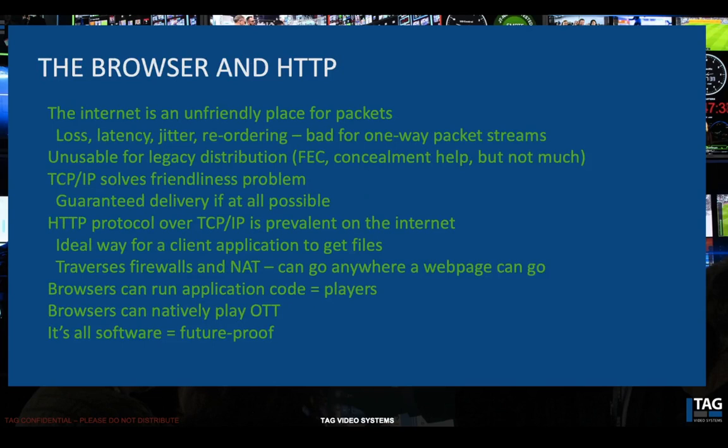Being web-centric, you know there's going to be a browser involved, and if there's a browser, HTTP is involved. Because the internet is a very unfriendly place for packets — if you try and push packets across the internet, they fall all over the floor, they get lost. We have latency issues, packet jitter, and possible reordering. It's really bad for one-way packet streams. This is why the internet was never used for streaming very successfully until OTT came along. For legacy distribution, even forward error correction and concealment can help, but not much. When you lose a bunch of packets, you've lost picture, you've lost sound.